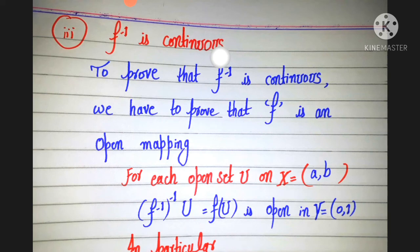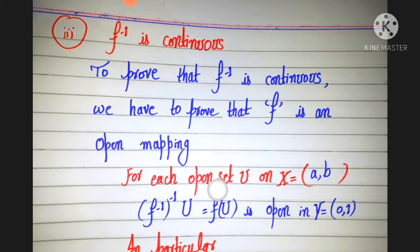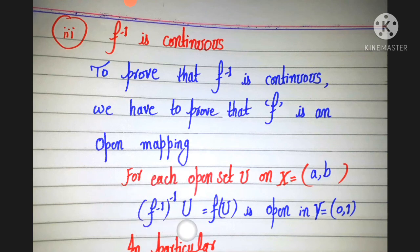Now we have to prove that f inverse is continuous. To prove that f inverse is continuous, we have to prove that f is an open mapping. For each open set U in X, the image f(U) is open in Y, where Y is the open interval (0,1).